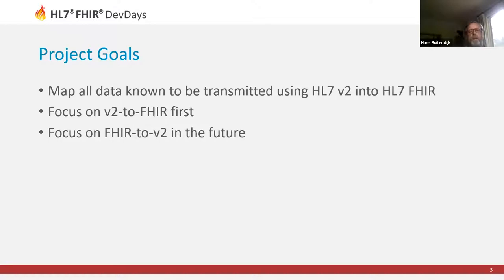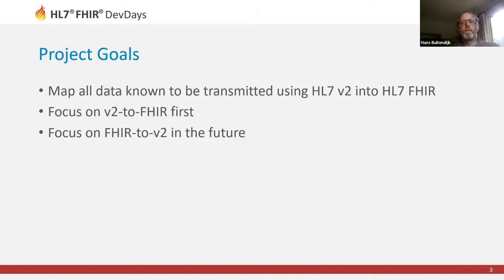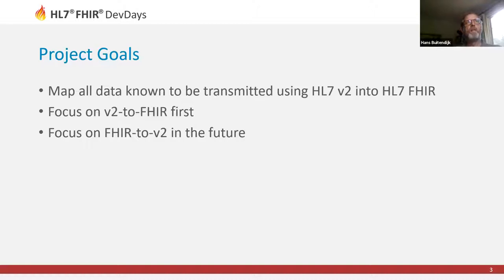The project goals center on mapping all data known to be transmitted using HL7 Version 2 into HL7 FHIR. The key point is 'known to be transmitted' — the project is not mapping everything Version 2 would allow, but rather what's actually used: messages, segments, fields, and components. This is estimated to be around 30–40 percent of what the standard allows, but it covers all actual usage. This goes further than FHIR's 80/20 approach.